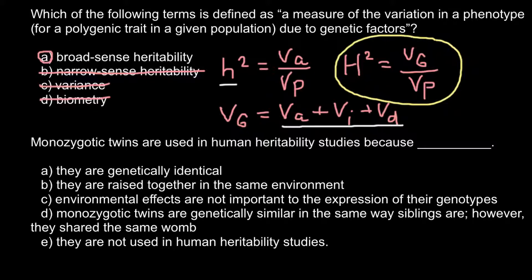I can tell you that this is not answer E, because monozygotic twins are used in genetic studies of humans. Humans do not reproduce as frequently as other animals like dogs, cats — which can reproduce every year — or fruit flies, which can reproduce every two weeks. So we cannot study many genetic questions in humans by doing different experiments; we just can observe. Monozygotic twins are a very important tool in such observations.